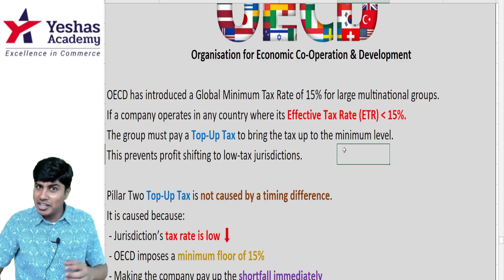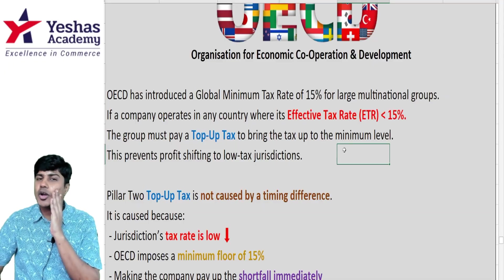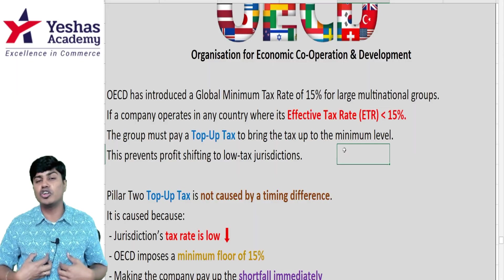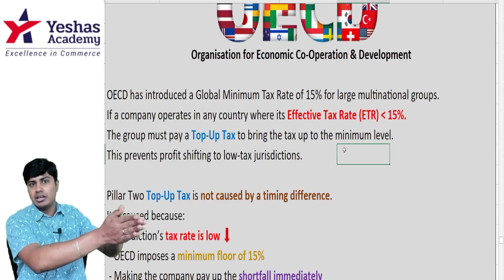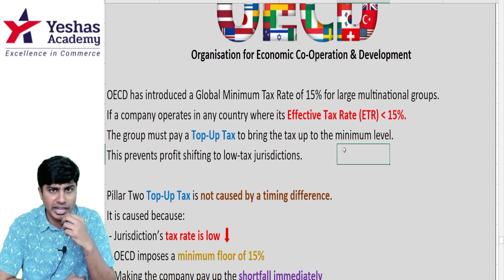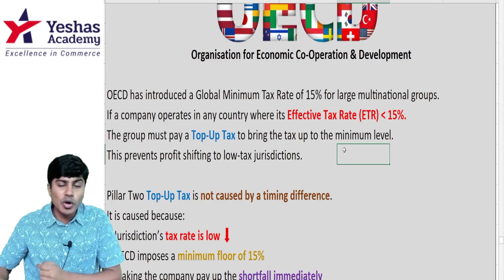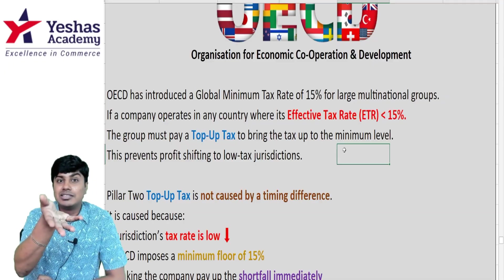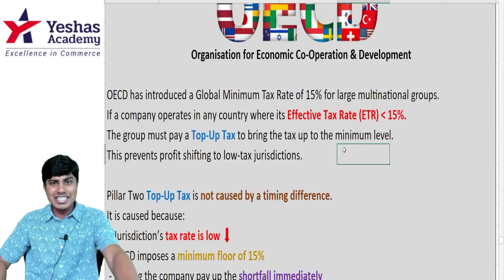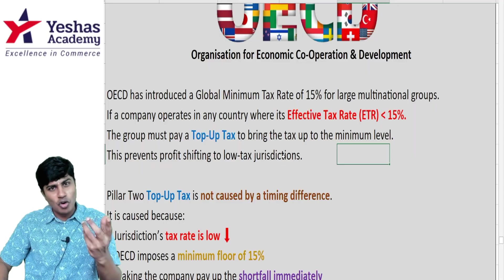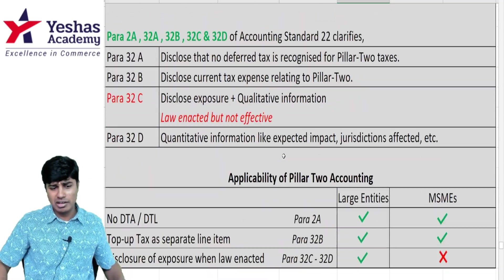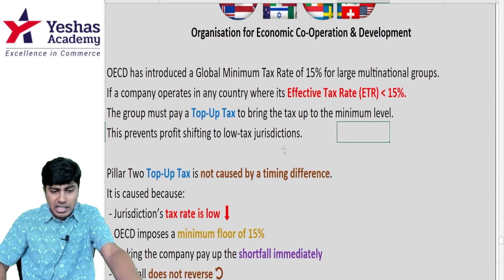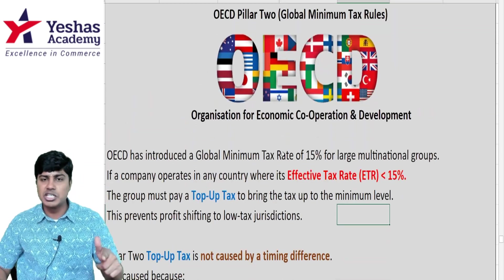Let's say I am TCS, an Indian company. In India, the tax rate applicable is 40%. I opened one subsidiary in Dubai, UAE, where the tax rate applicable is 9%. I would want to show a lot of my revenue in my subsidiary in Dubai so that I end up paying a lesser amount of tax. If this is being done, the Indian government loses revenue. So OECD tells that if in any country the effective tax rate is less than 15%, then that company would have to pay top-up tax to bring it up to 15%.